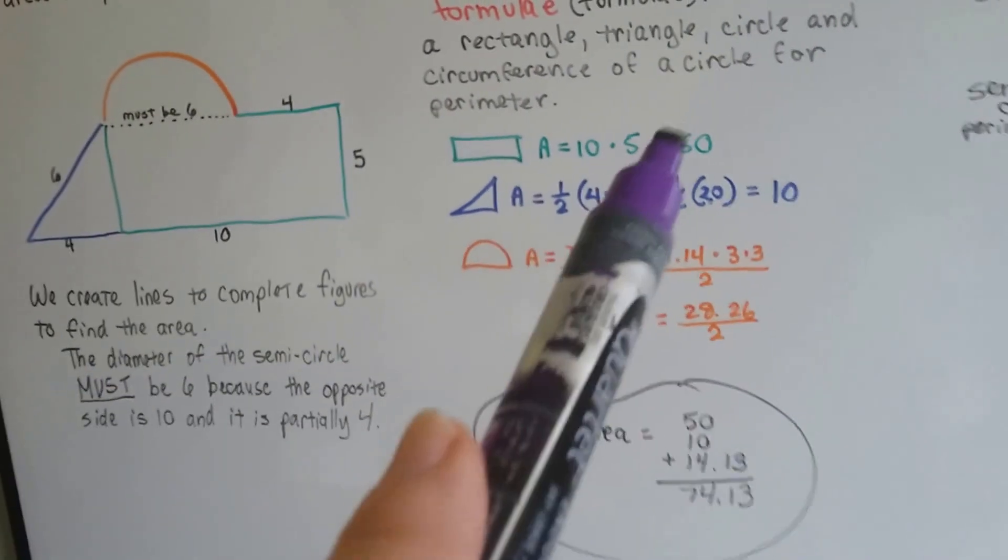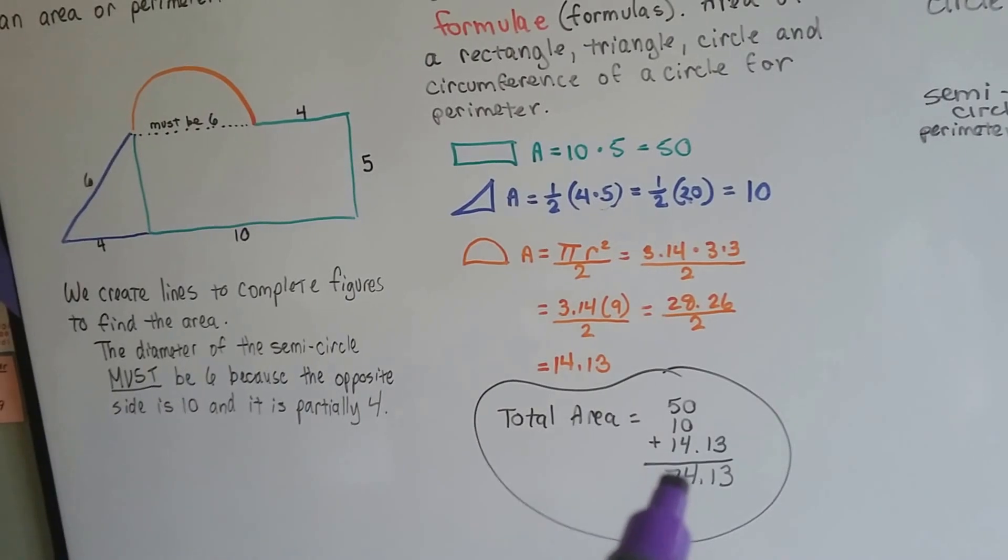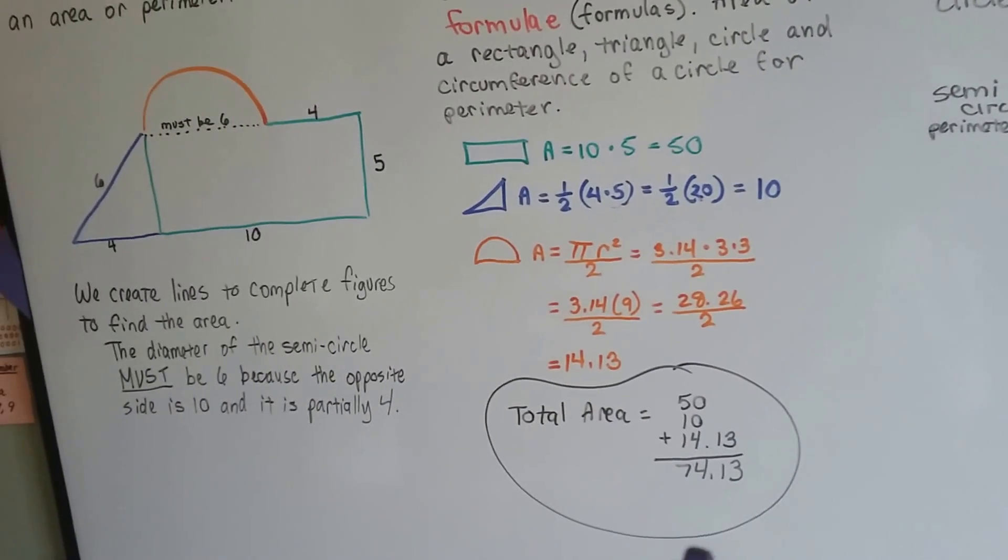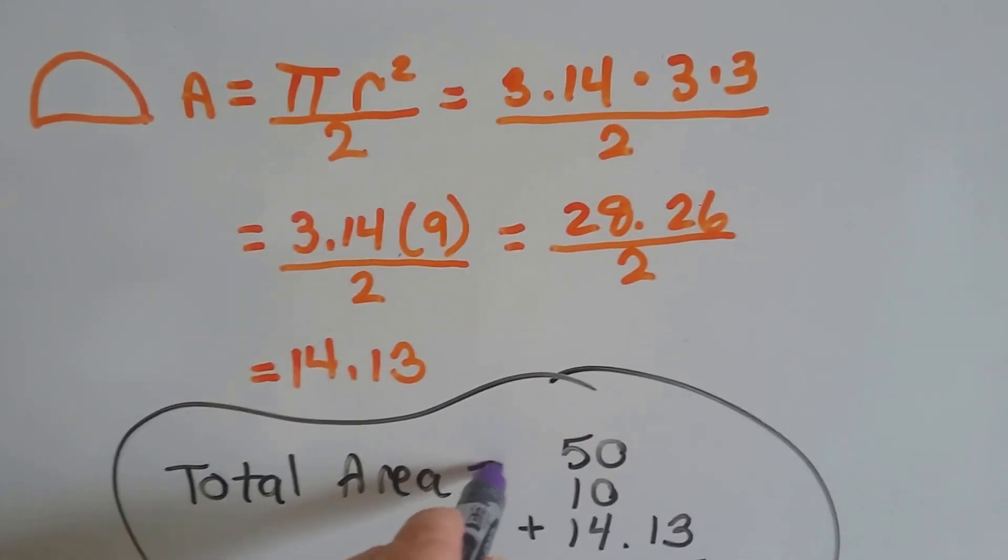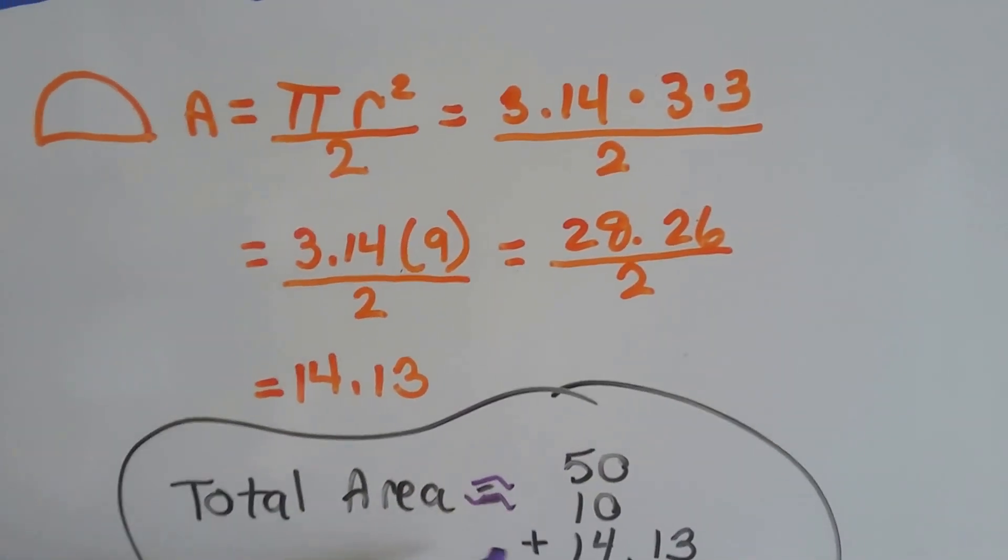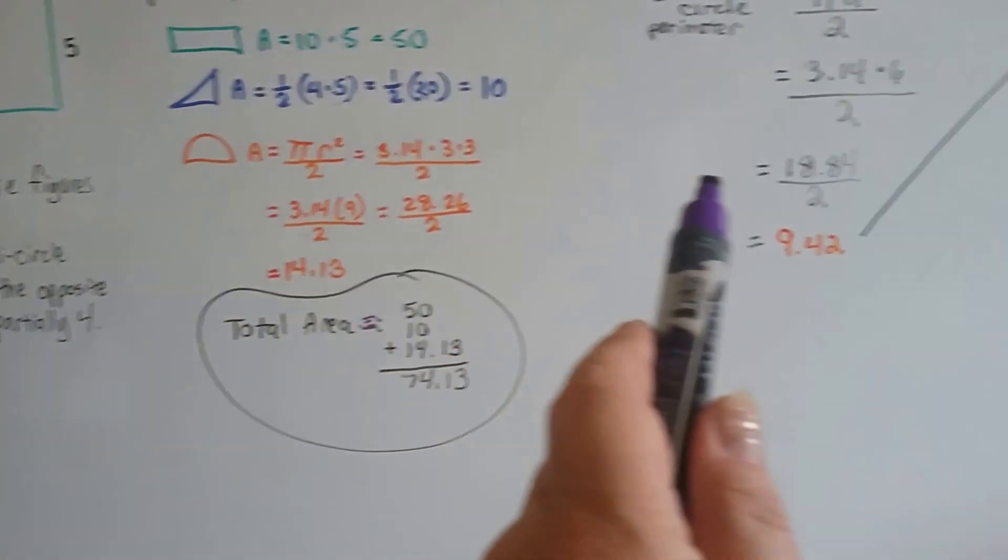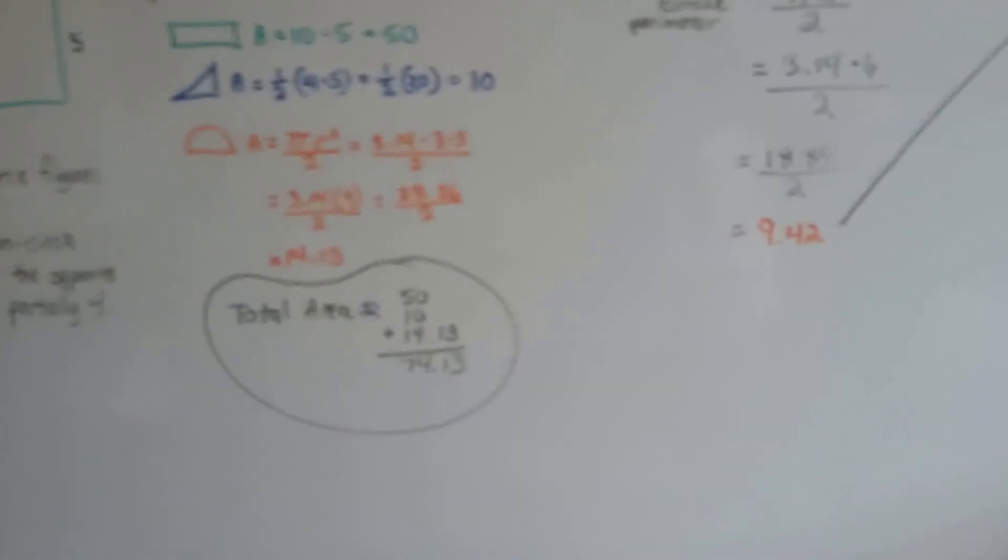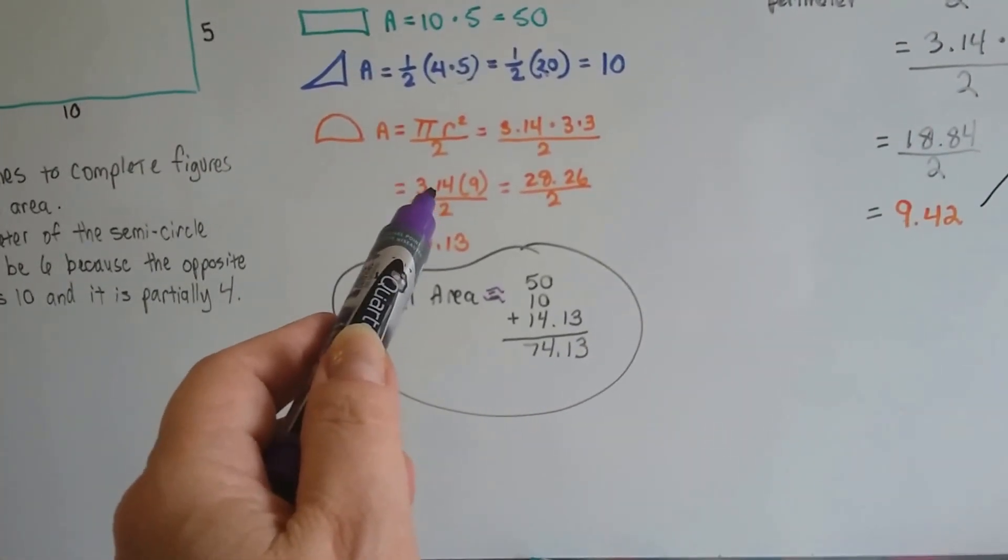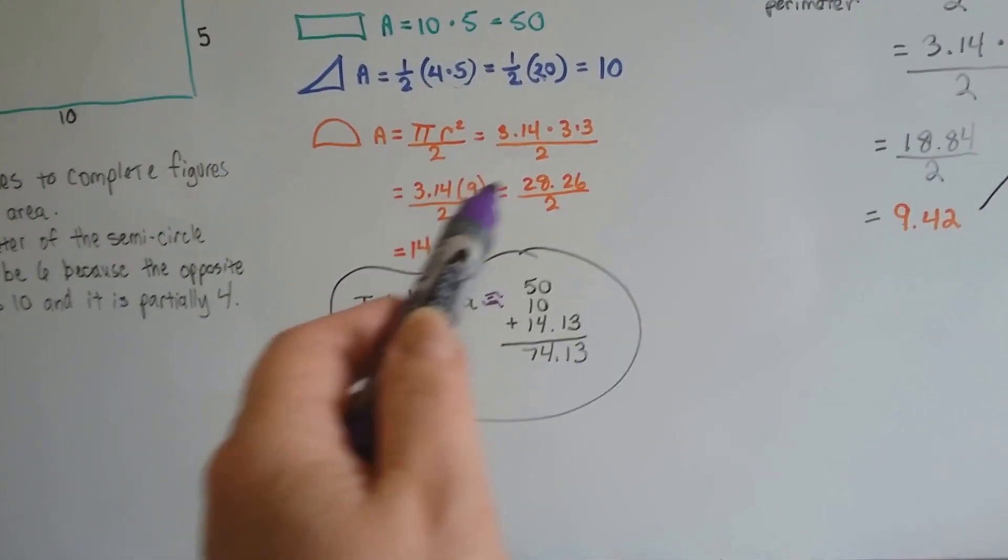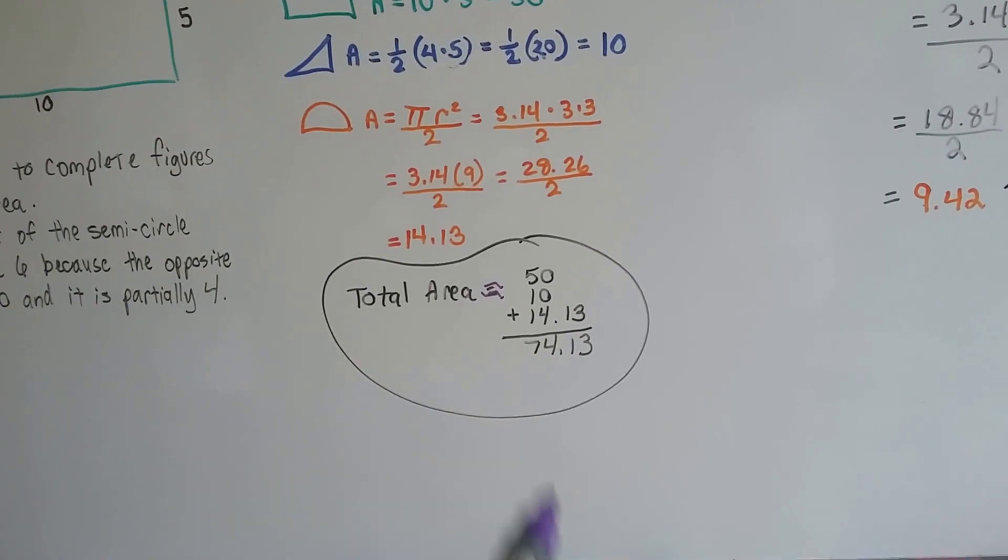Now we need to add the 50, the 10, and the 14.13. And we get 74.13. And actually, because we used pi, this is an approximation. Because pi is this really long decimal that just doesn't seem to end, so this is not an exact number because we didn't use all the numbers of pi in the answer. We only use a rounded number, so that's an approximate.